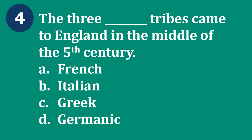Question 4: The three dash tribes came to England in the middle of the 5th century — A. French, B. Italian, C. Greek, D. Germanic. The correct answer is D — Germanic. The three Germanic tribes came to England in the middle of the 5th century.